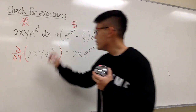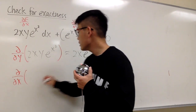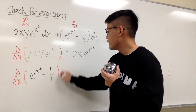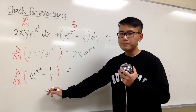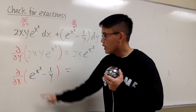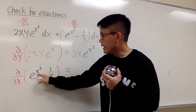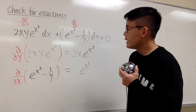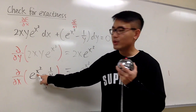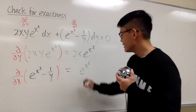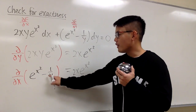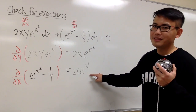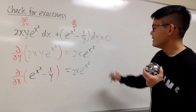On the other hand, let's differentiate N, which is e^(x²) − 1/y, with respect to x. X is the variable here. We have to differentiate e^(x²): e to the something, we repeat that first — e^(x²) — and the chain rule says we multiply by 2x. So we have 2x here. The derivative of negative 1/y in the x world is just 0. So this and that are actually the same. That means, yes, this equation is exact.